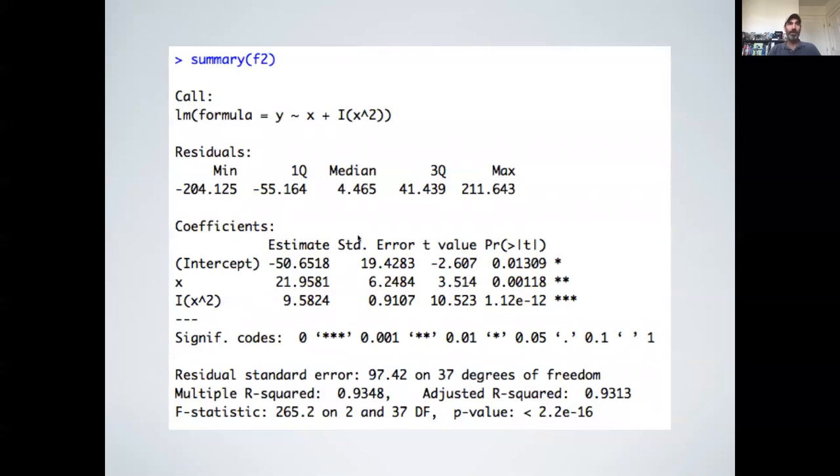If we compare that to our quadratic, that was explaining about 93 and a half percent. We didn't actually explain a lot in terms of raw percentages, but there wasn't much left to explain. We clearly explained over half of what was remaining. But how well did it actually do?